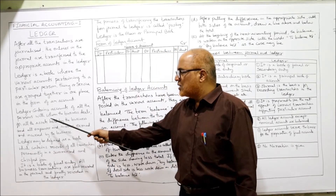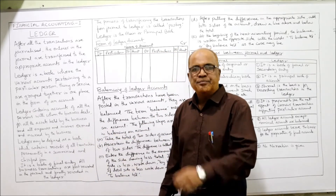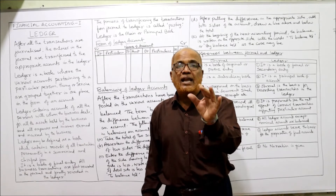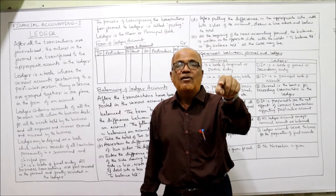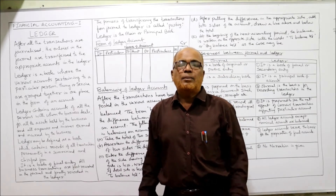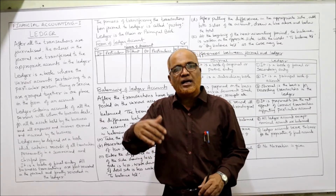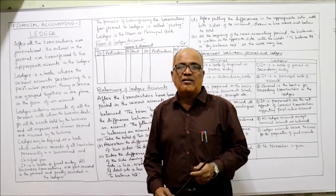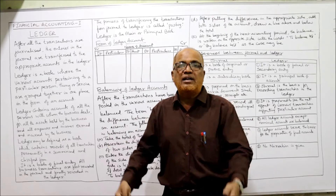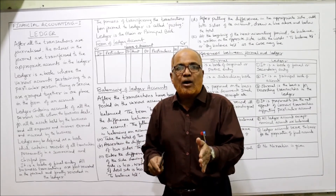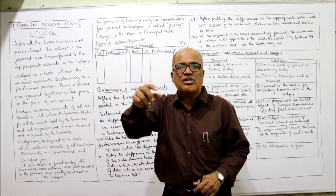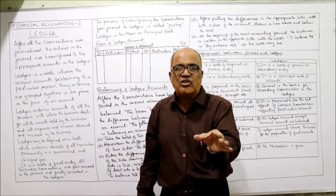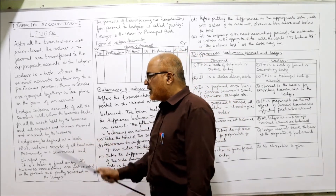Ledger contains accounts of all persons with whom the business deals — that means all personal accounts of customers, creditors, suppliers, bankers, and so on. We open Mr. X account, Mr. Y account, Mr. Z account, Mr. A account, Mr. B account — all personal accounts are opened in the ledger.